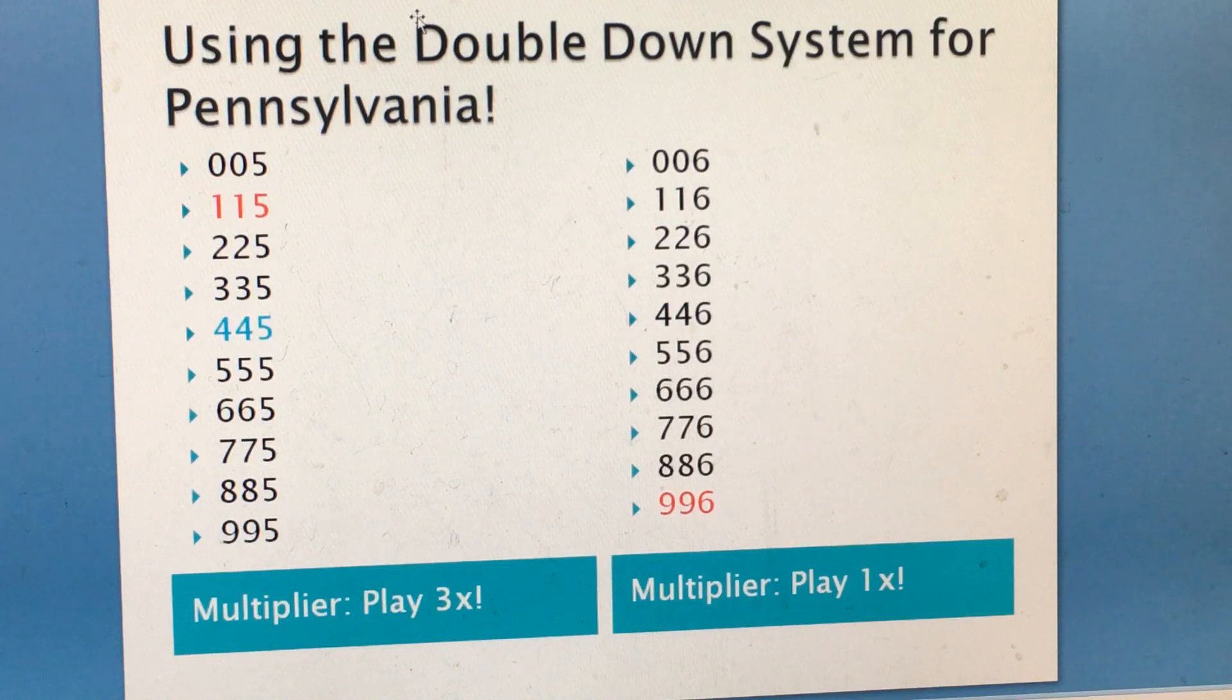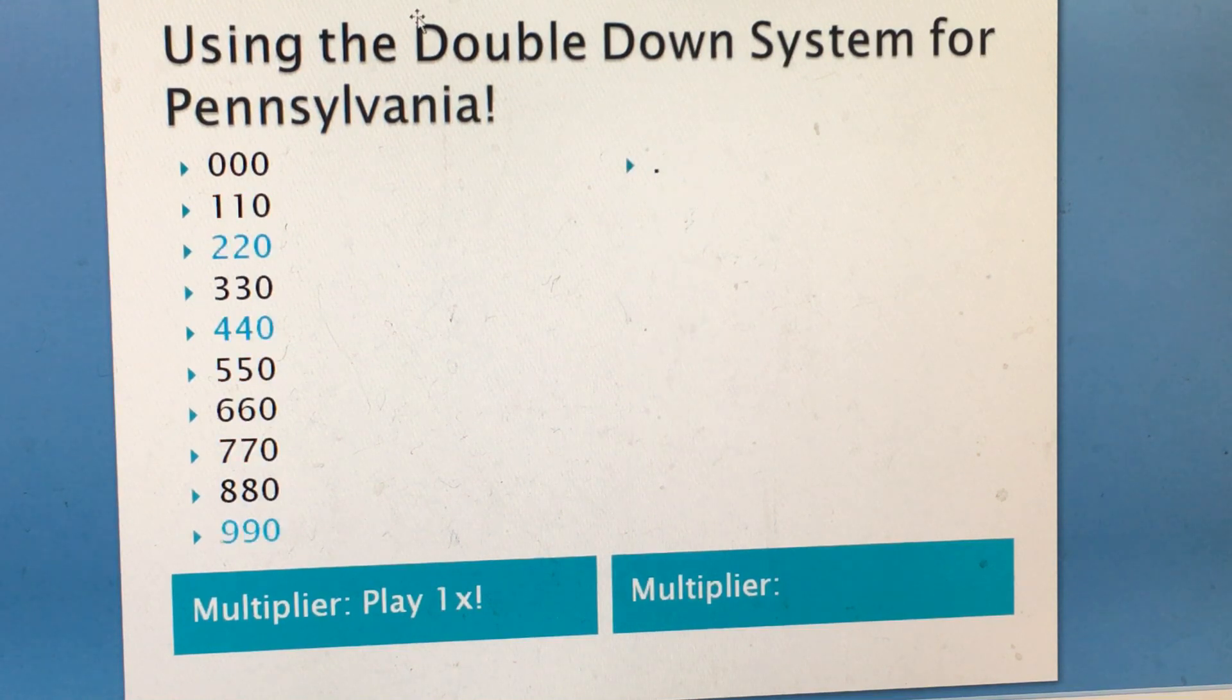Set 3 and 4, multipliers are 3 and 1. Set 5, set 6, multipliers are 3 and 3. And last set has been hitting twice.